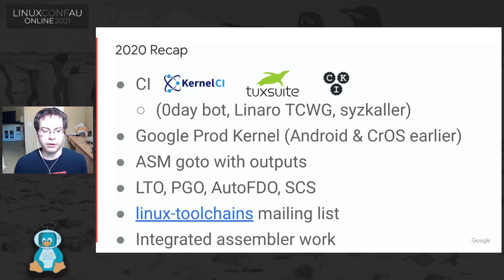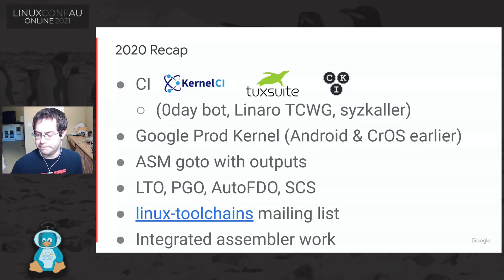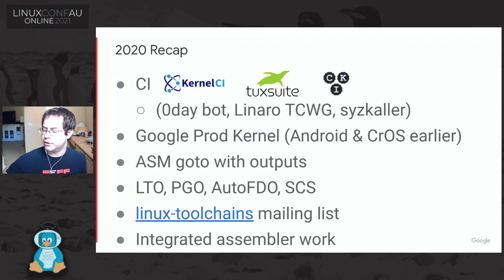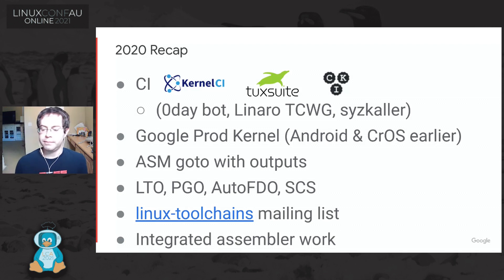A compiler feature we implemented was called ASM GoToWithOutputs — a very interesting kernel feature using inline assembly but transferring control flow back into C code. It had some limitations in the original design, very similar to calling functions or methods in C++ where they might throw an exception and trigger a control flow transfer. You almost couldn't return values out of it — if you had an ASM block with control flow back into C, you couldn't have any outputs. So this is something we were able to improve on the design.